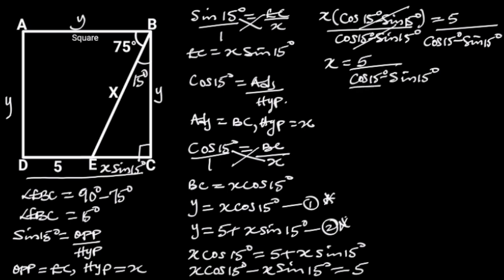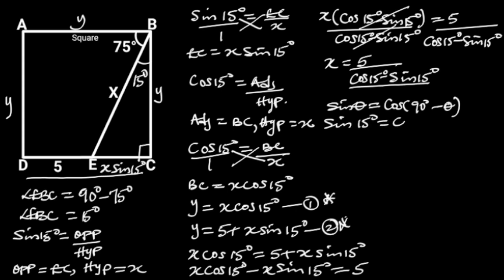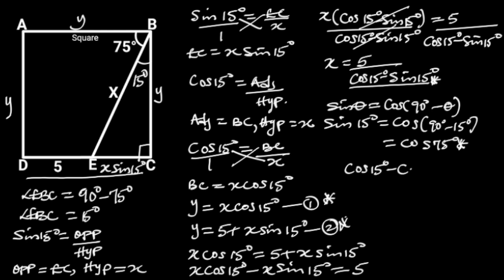Going further, let's simplify cos 15 degrees minus sine 15 degrees. To do so, let's recall that sine theta is equal to cos(90 degrees minus theta). It follows that sine 15 degrees is equal to cos(90 degrees minus 15 degrees), which is equal to cos 75 degrees. Next, we replace sine 15 degrees with cos 75 degrees, giving us cos 15 degrees minus cos 75 degrees.